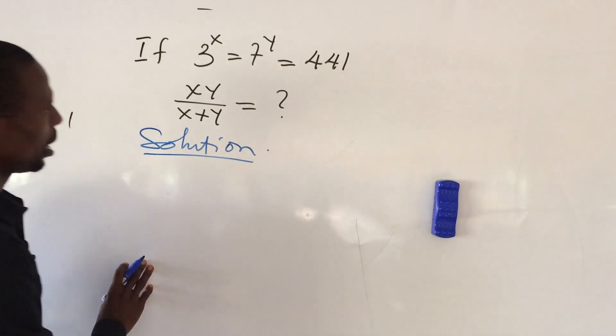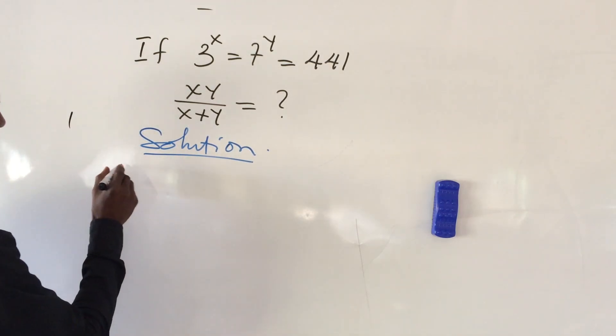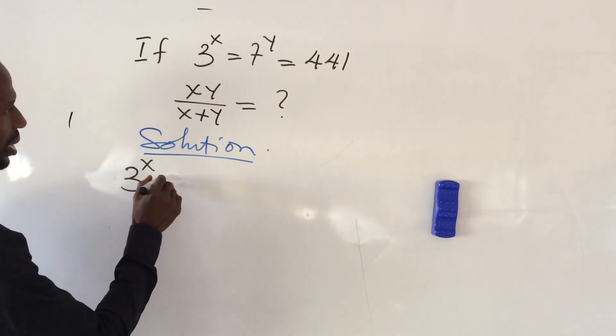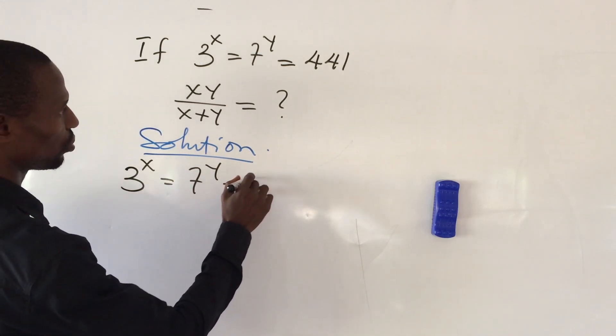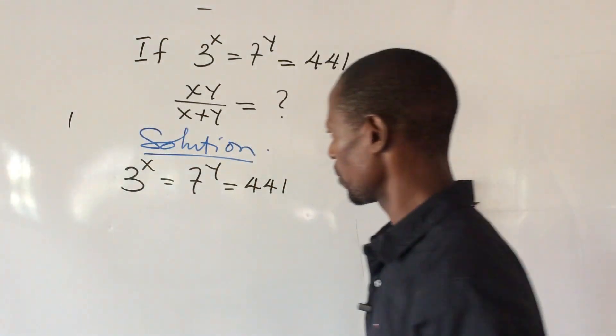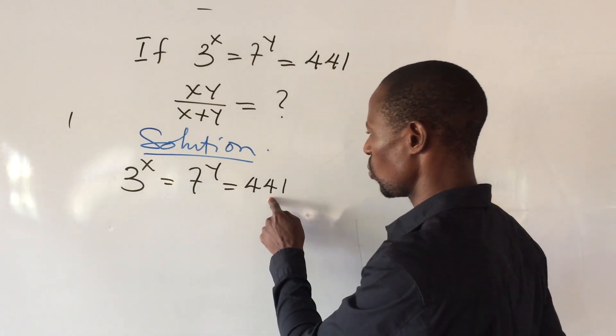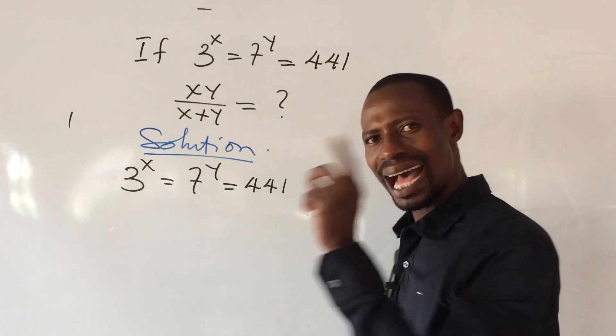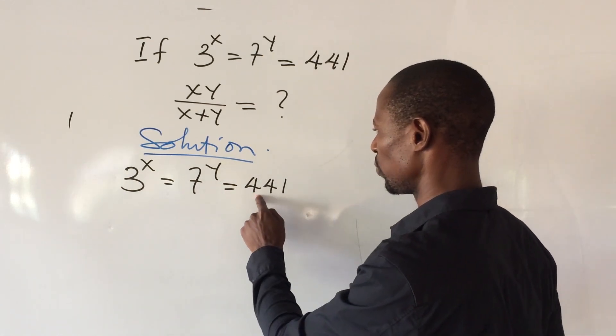We put down our question and the question says 3 to the power of x equal to 7 to the power of y equal to 441. Now, from this expression, it is clear that 3 to the power of x will be equal to 441. At the same time, 7 to the power of y will be equal to 441.